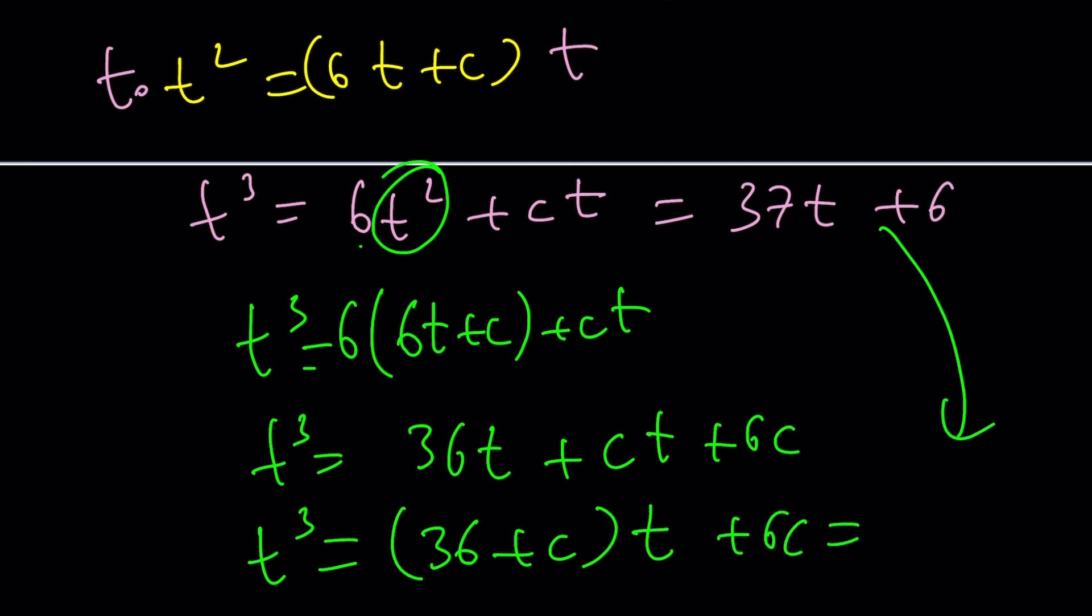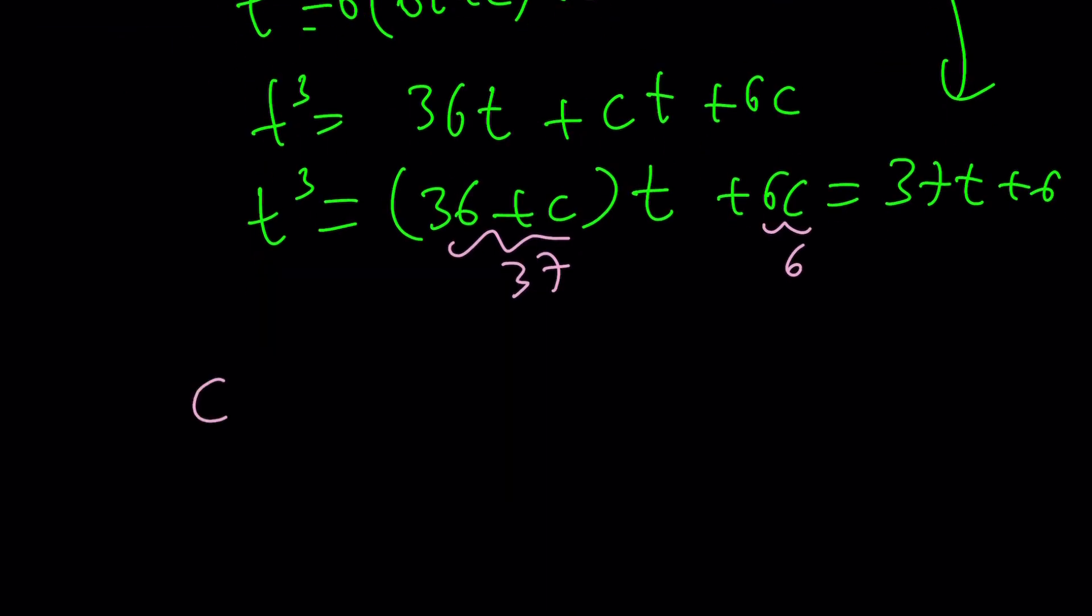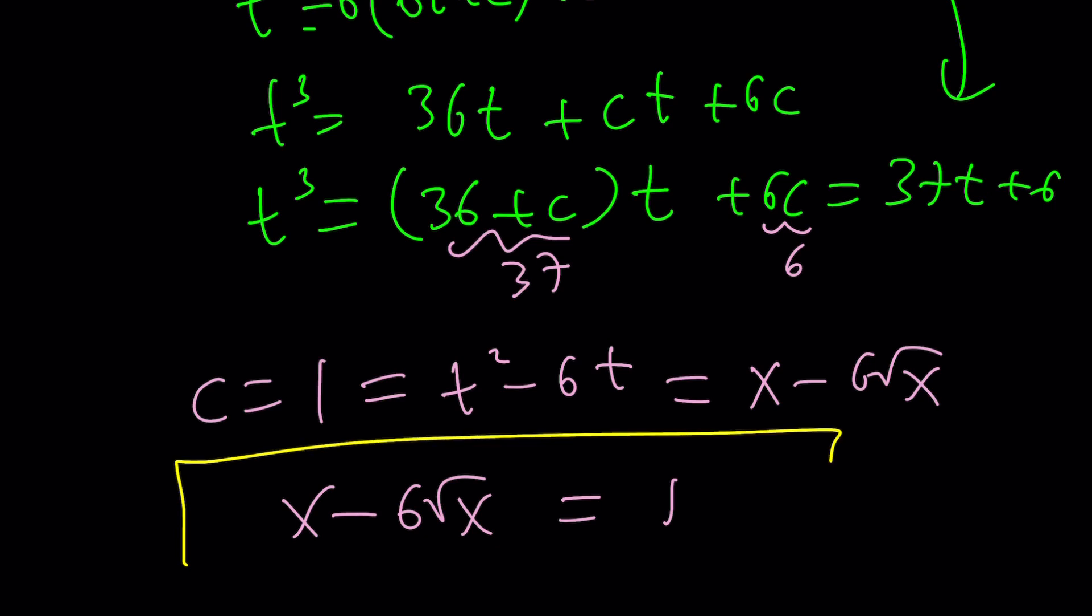And this is equal to 37t plus 6. So this needs to be 37. And this needs to be 6. Which means c is equal to 1. But c is t squared minus 6t, which is x minus 6 root x. In other words, x minus 6 root x is 1, one more time.